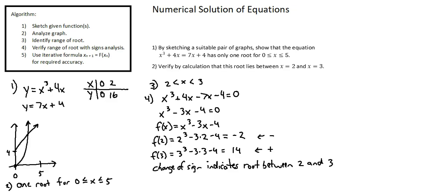In summary, we sketched our functions, showing that there is one root between 0 and 5 — that's our graphical analysis. And we've completed our analysis of the input values of 2 and 3, producing a sign change indicating a root between 2 and 3, which is our signs analysis. We've completed our requirements, and this concludes Numerical Solution of Equations Example 1.